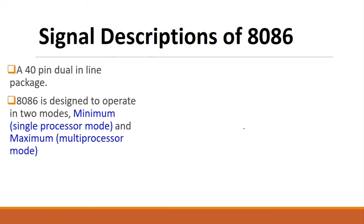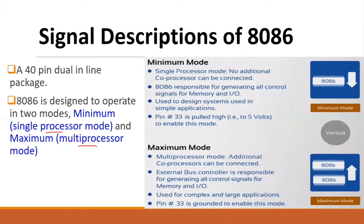The 8086 is a single processor and a co-processor can be used as an additional processor. Minimum mode is a single processor and maximum mode is a multi-processor. In minimum mode, the 8086 is responsible for generating all control signals for memory and input/output. Minimum mode is a simple application for development and design.